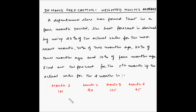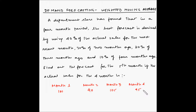The actual sales for the four months are given: in the first month, actual sales is 100 units; in the second month, actual sales is 90 units; in the third month, actual sales is 105 units; and in the fourth month, actual sales is 95 units.